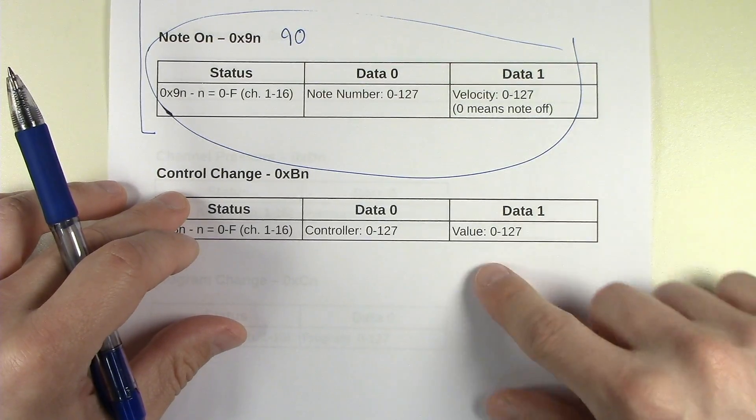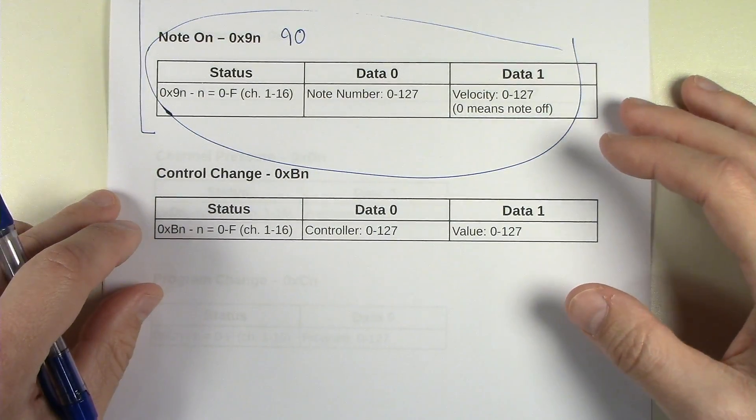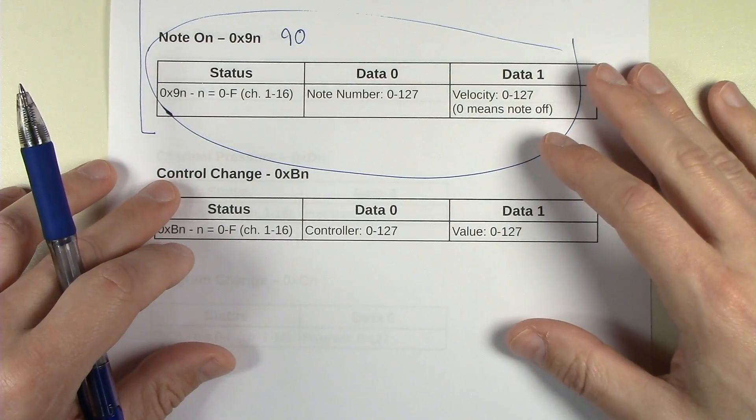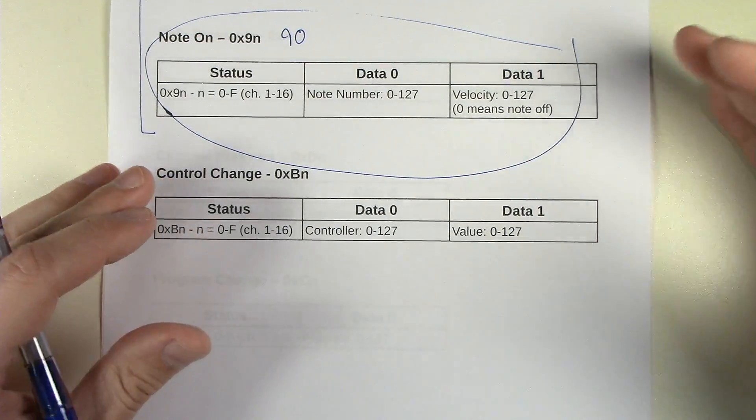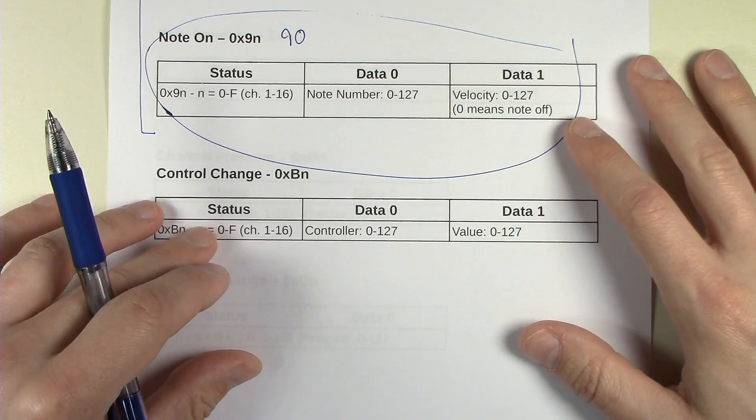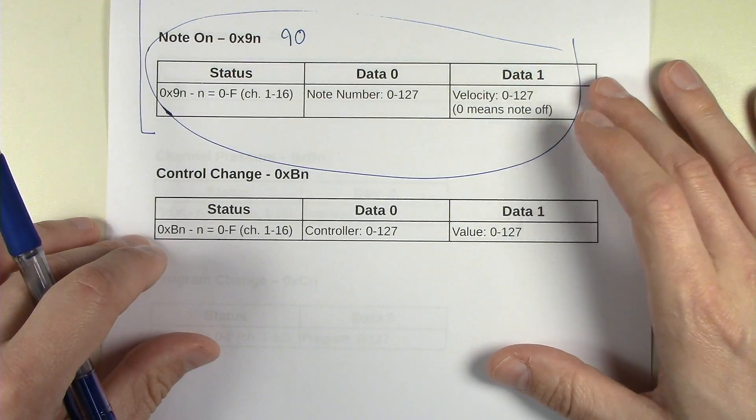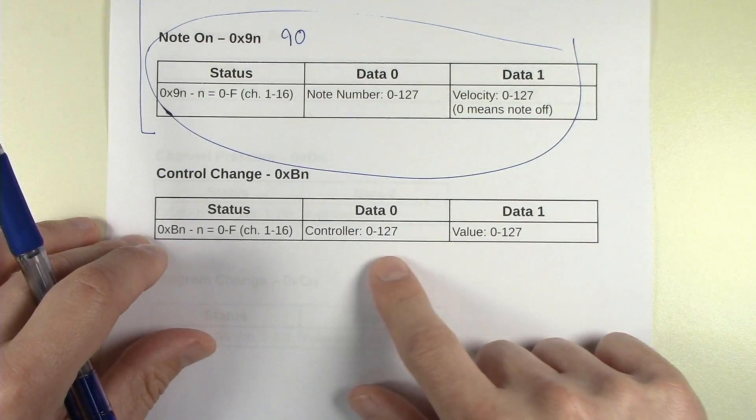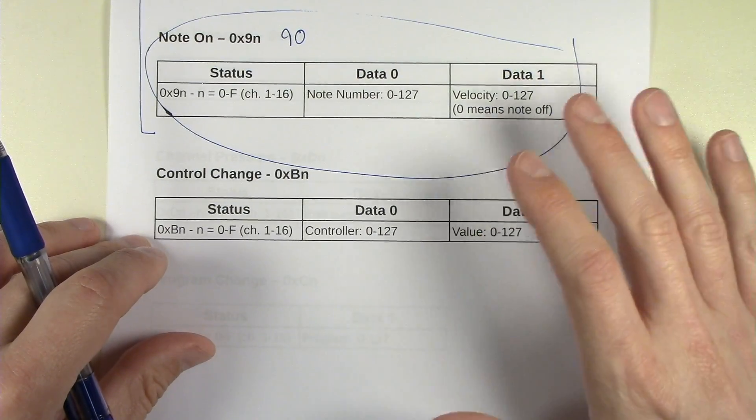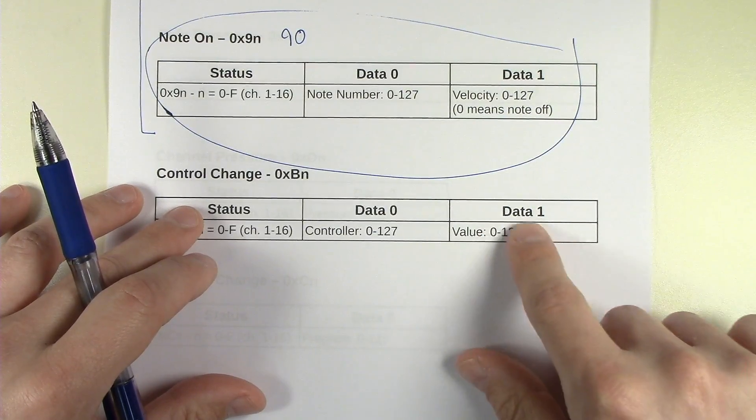And those basically are for sending some sort of a value between one value and another value, max to min. The numbers, the value doesn't actually correspond to anything in particular. It's really dependent upon the product or the function. But basically, normally it's between zero being like the very lowest thing to 127 being the highest thing.